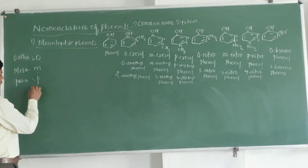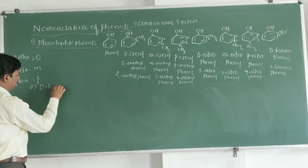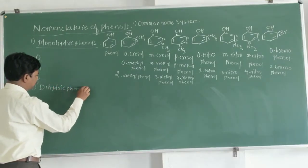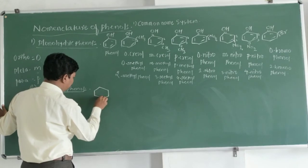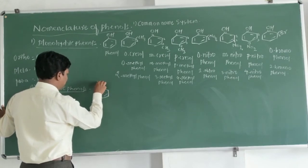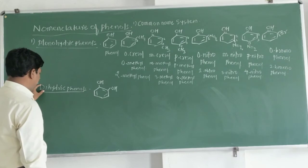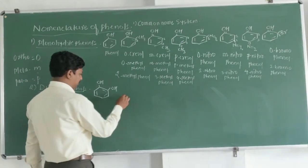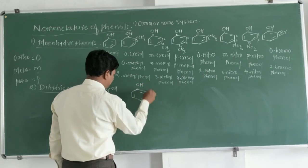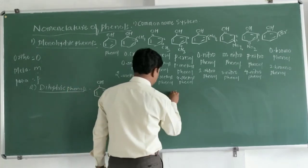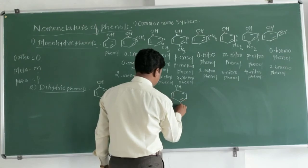Now the second type of phenol is the dihydric phenol. The examples are like this: on the benzene ring, two OH groups are present. This is one structure, here is the second structure, and one more structure — each having two OH groups on the benzene ring.